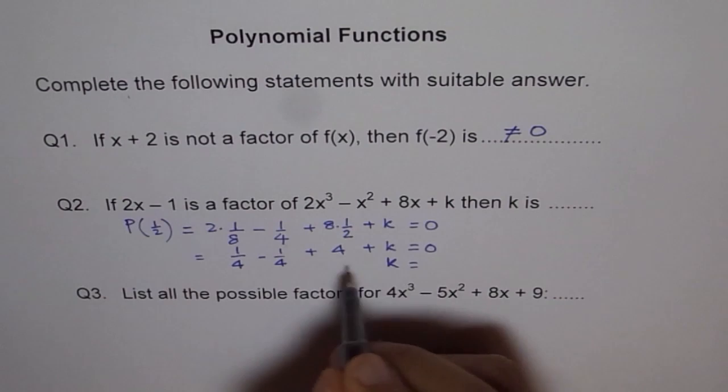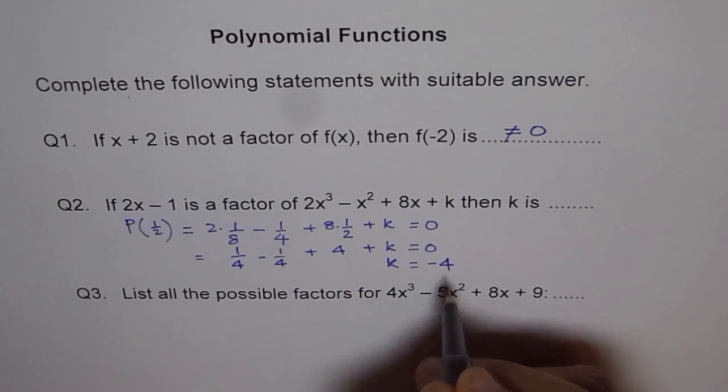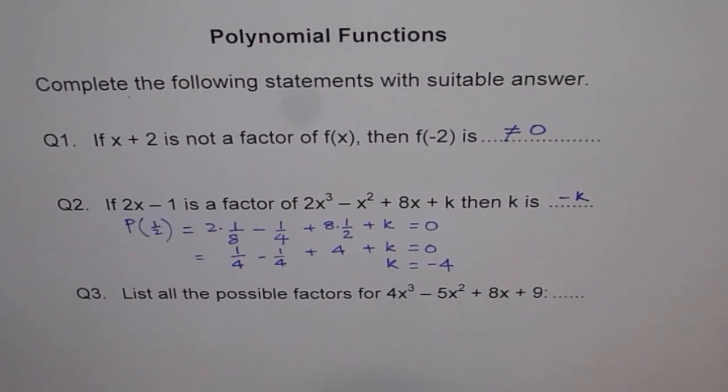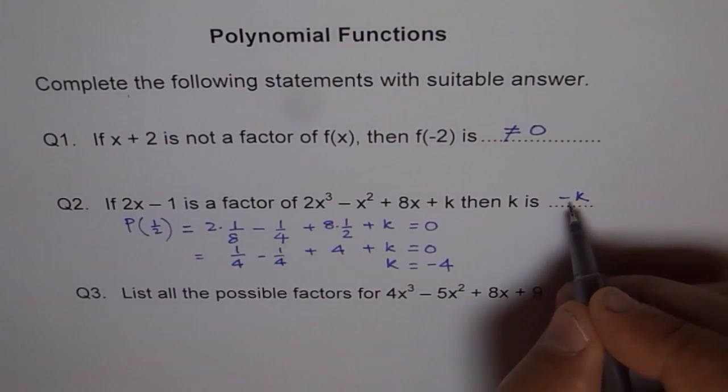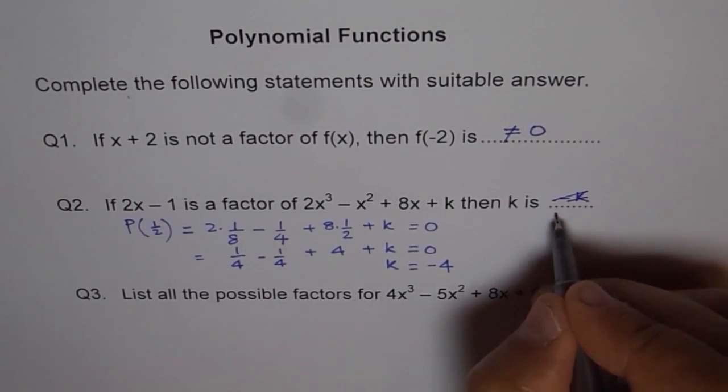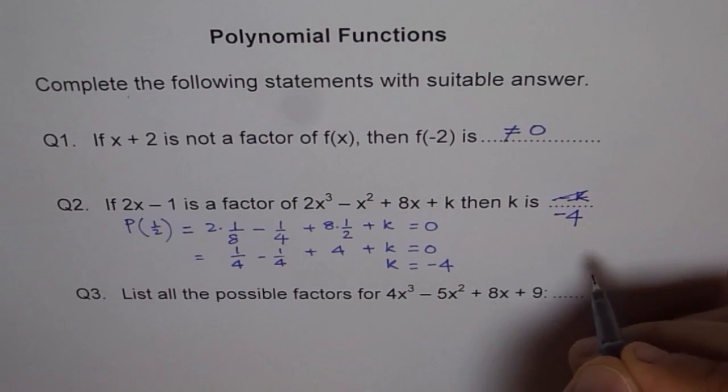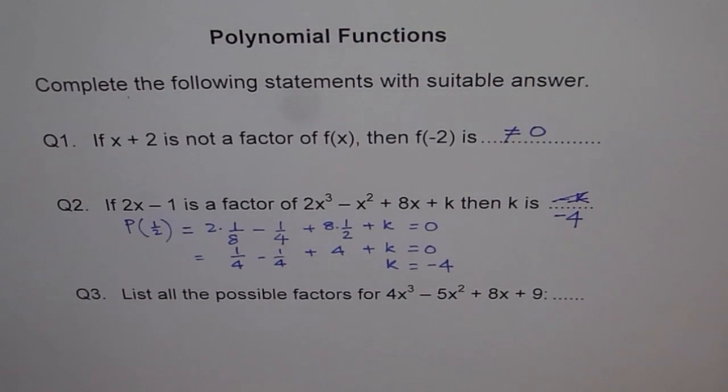k equals to -4. So k is -4. Pardon me for these mistakes. I keep making them, but I hope you understand what I'm trying to say.